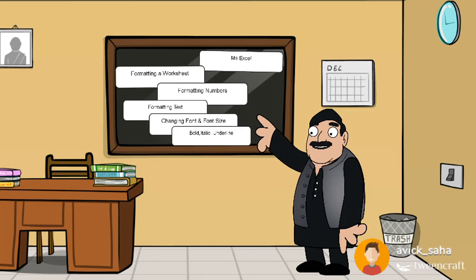Good morning students. Today we will discuss MS Excel. There are three branches of MS Excel formatting: formatting a worksheet, formatting numbers, and formatting text. Inside formatting text, we have changing font and font size. We will discuss what is bold, italic, and underline.